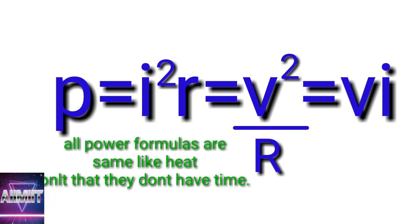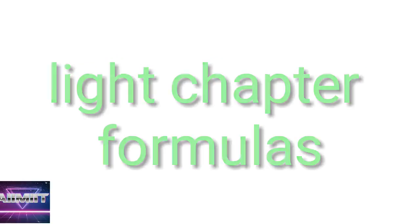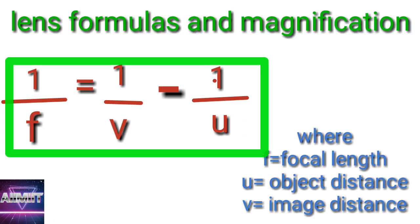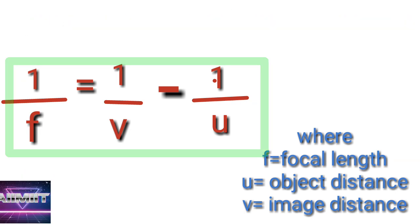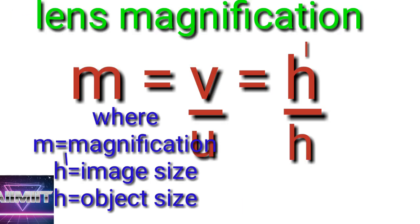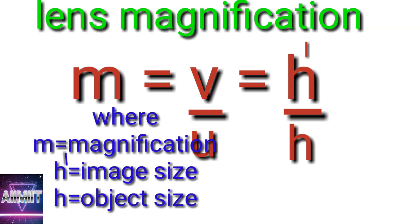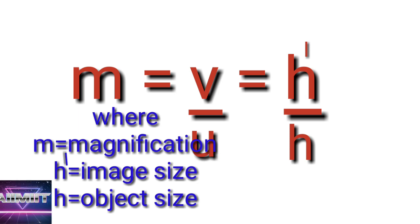Now we will discuss light lesson formulas one by one. Number eleven: Lens formula is 1/f = 1/v - 1/u, where f is focal length, v is image distance, and u is object distance. The magnification formula for lenses is m = v/u or h'/h, where h' is image size and h is object size.